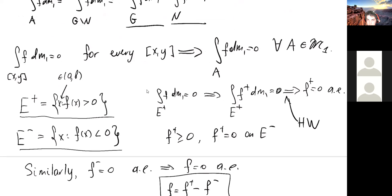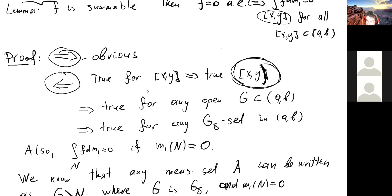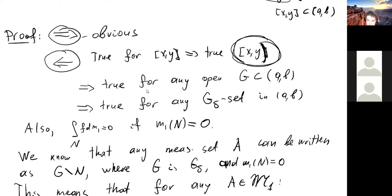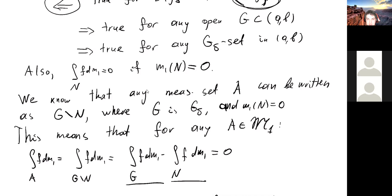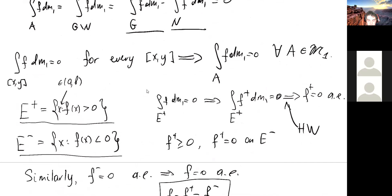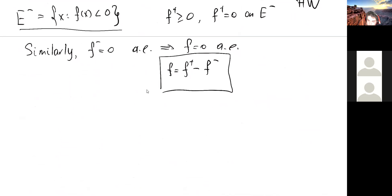Let's look at the strategy again. We started with: any closed interval implies any half-open interval; any half-open interval implies any open set; any open set implies every G-delta set; any G-delta set implies any measurable set. Now instead of saying the integral is zero over any interval, we know the integral is zero over any measurable set. We then choose two particular measurable sets — where f is positive and where f is negative — and deduce that f is zero almost everywhere.